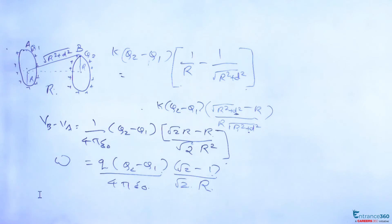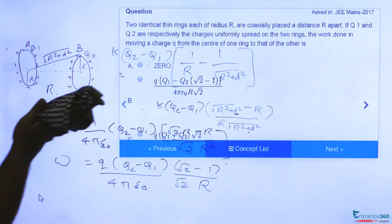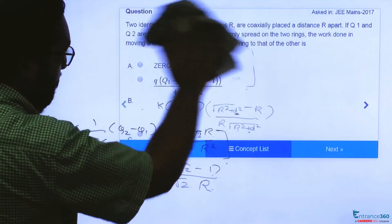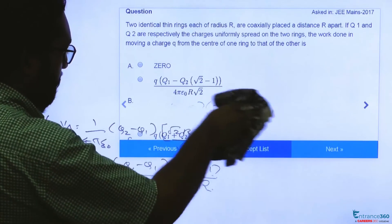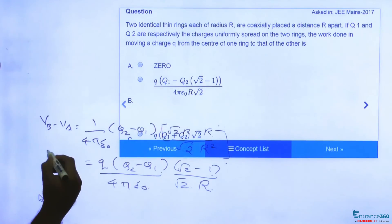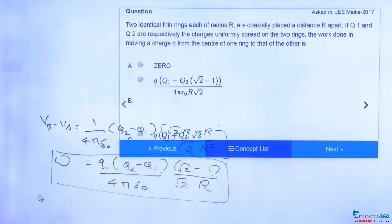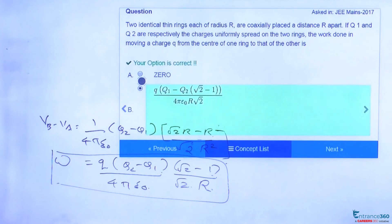So now let's go back to the question. It is Q into Q1 minus Q2, 4 pi epsilon 0, root 2 minus 1, it is option B. So final answer B, this is our work done and we have same option as B, so right answer is B.